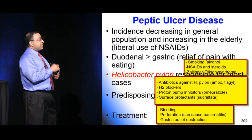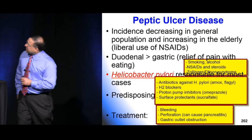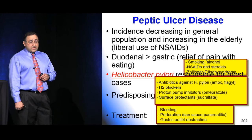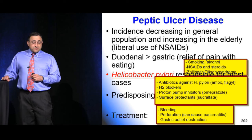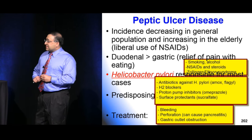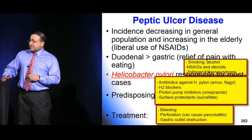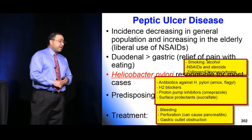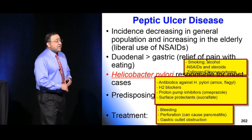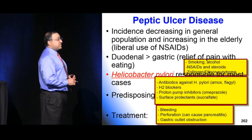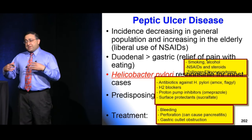Moving down to the stomach — peptic ulcer disease is common. H. pylori is still responsible for most cases, and most ulcers are in the duodenum rather than the stomach itself. Risk factors include NSAID use, smoking, alcohol, and in some cases steroids. Zollinger-Ellison syndrome is a zebra. Formal recommendations are a 4-6 week trial of an H2 blocker first, then test for H. pylori if they fail, and treat with PPI plus amoxicillin plus Flagyl or clarithromycin.